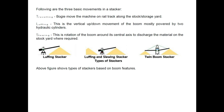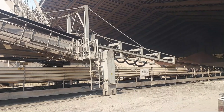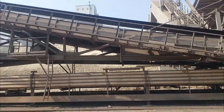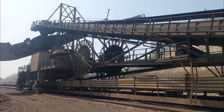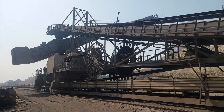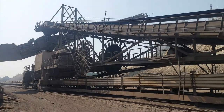There are three basic movements in a stacker. First, the traveling bogie moves the machine forward on the rail track along the stockpile storage yard.